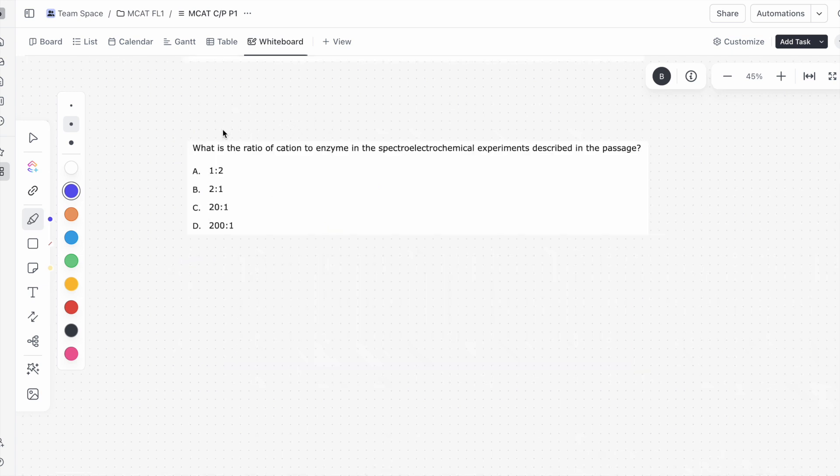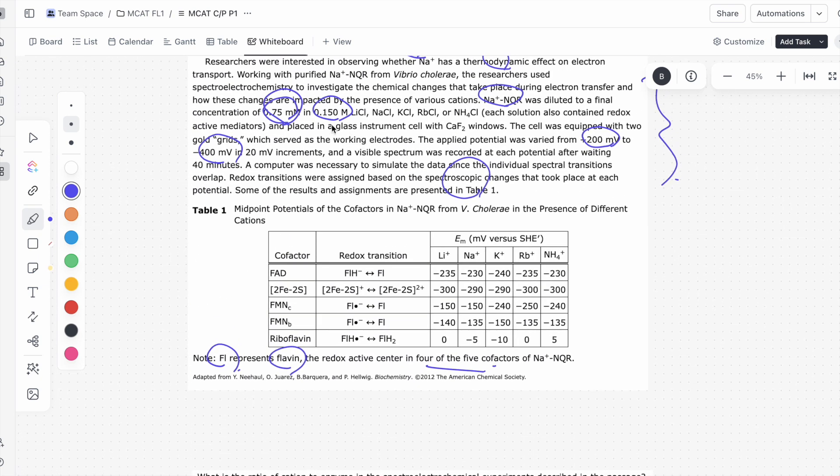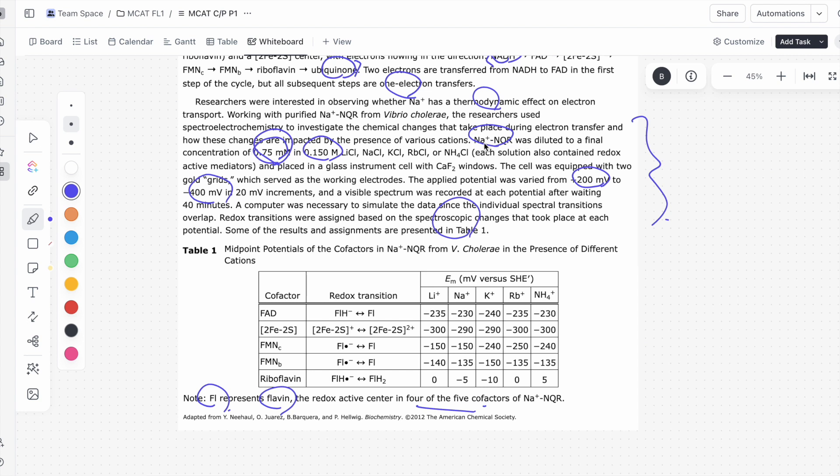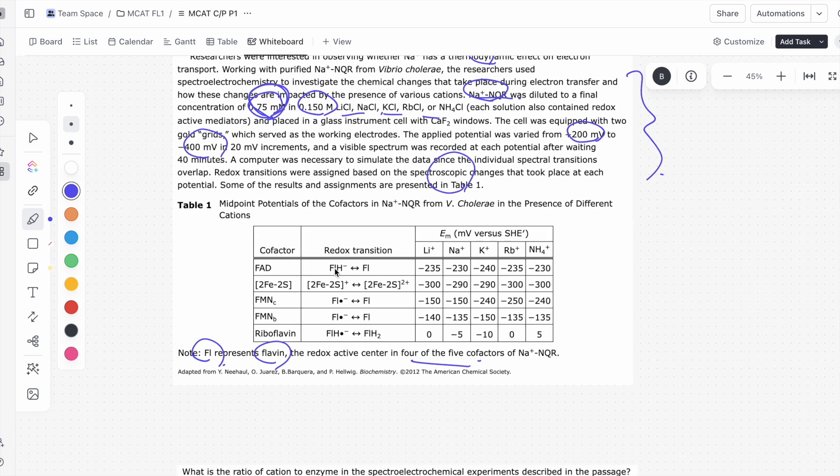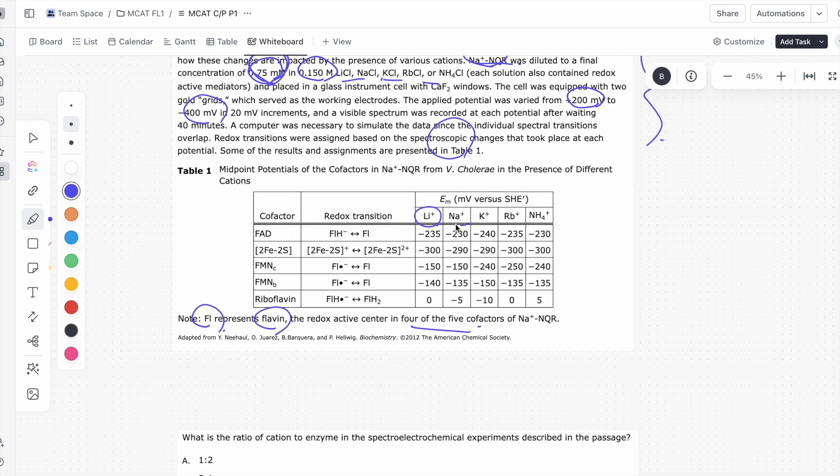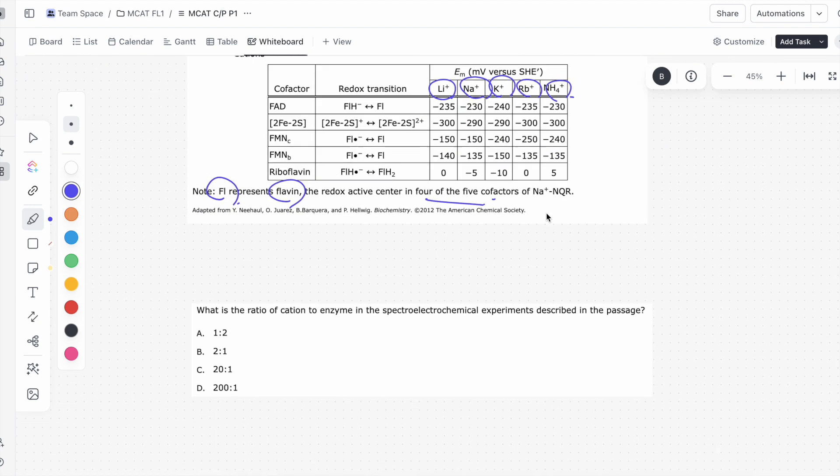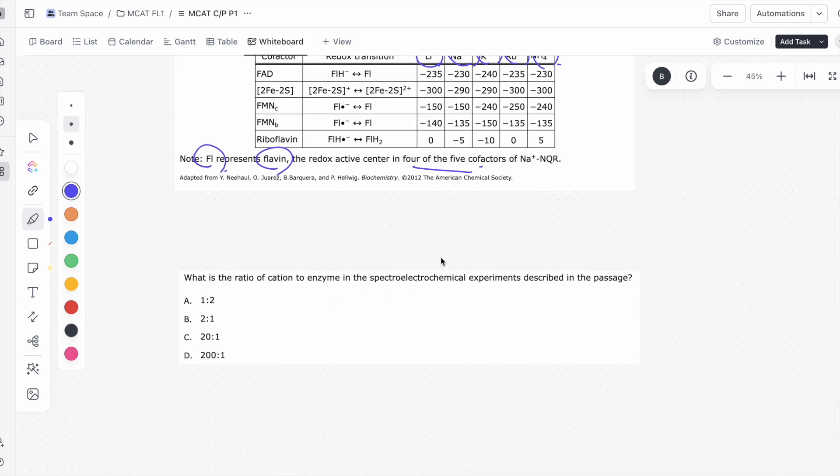Let's take a look at the next question here. It says, what is the ratio of cation to enzyme in the spectral electrochemical experiments described in the passage? The passage shows us that the concentration of this enzyme was 0.75 millimolar, and the concentration of each cation was 0.15 molar. These are the cations they're talking about. They are actually on the table. These are the cations.